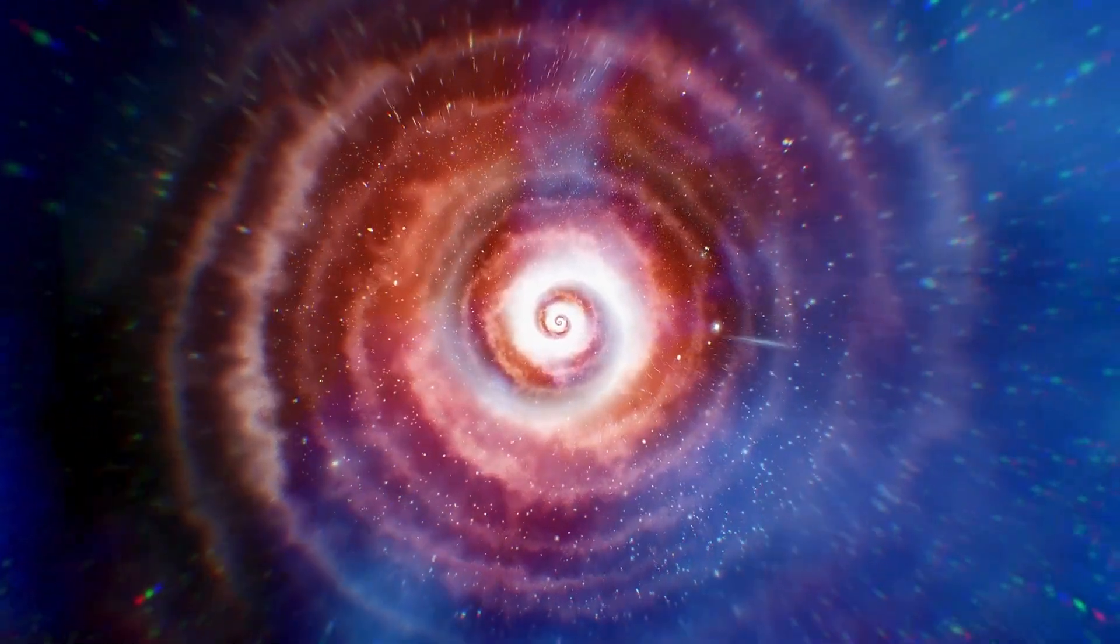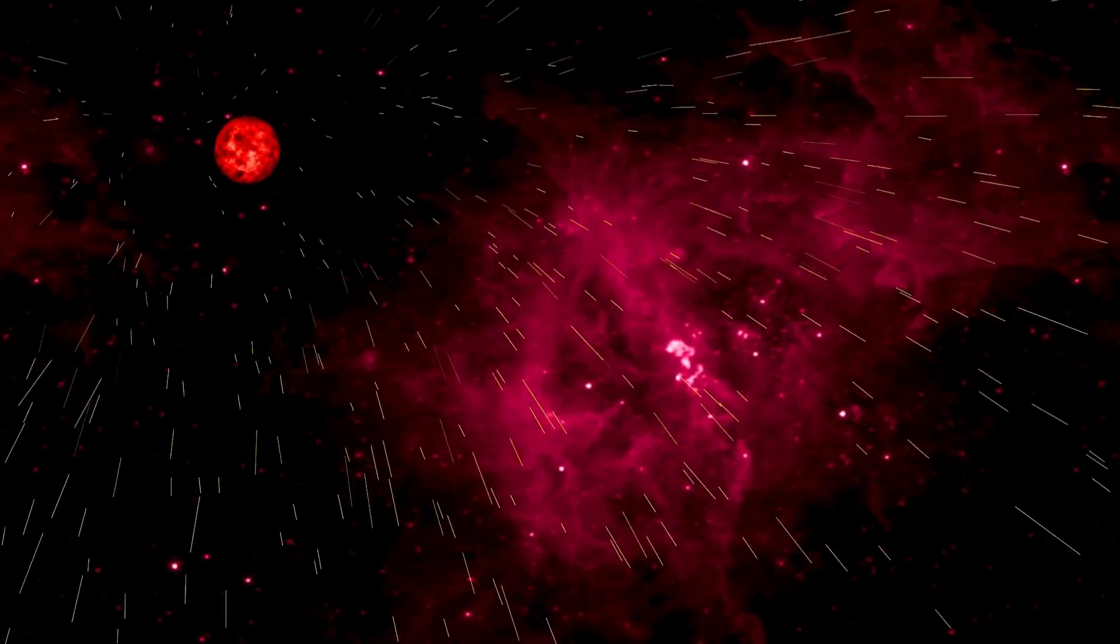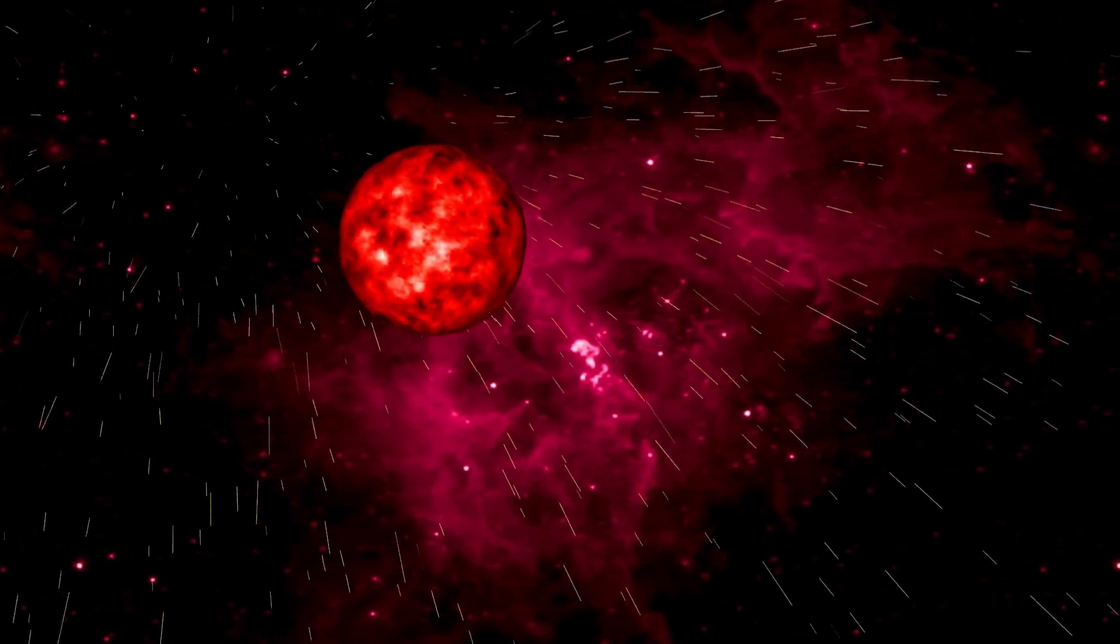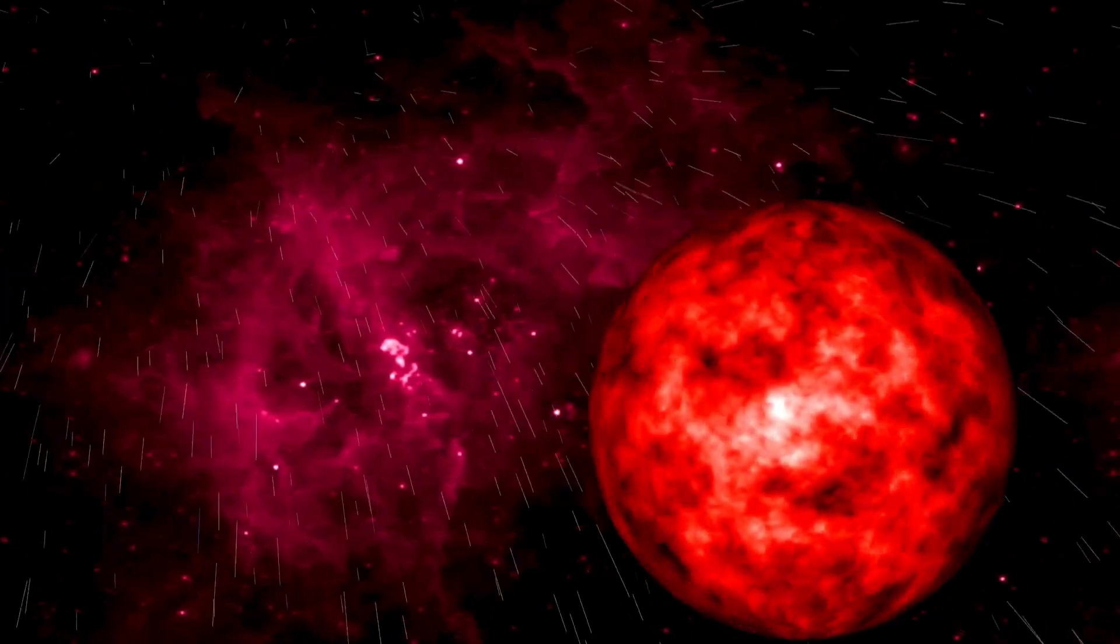Can you imagine a single star overshadowing our entire solar system? To give some perspective, the sheer immensity of Betelgeuse—if it replaced our sun, its edges would stretch all the way to Jupiter. How could a single star ever achieve such epic proportions?